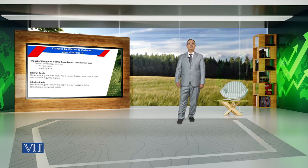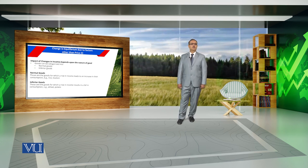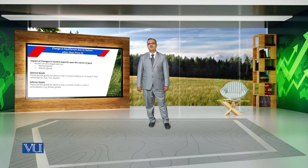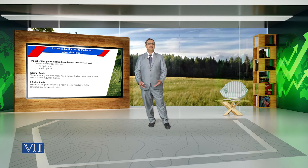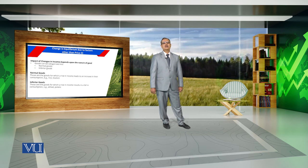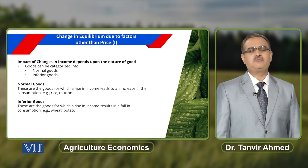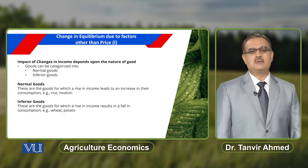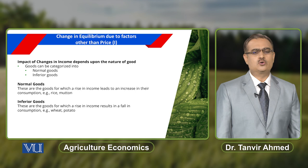If mutton is a normal good, then if income of the household increases, consumption of mutton will also increase. But there are certain commodities that have a negative association between income and their consumption — if income increases, there may be a decrease in consumption of that commodity. For example, if wheat and potato are inferior goods, then because of an increase in income, consumption of wheat and potato will decrease.